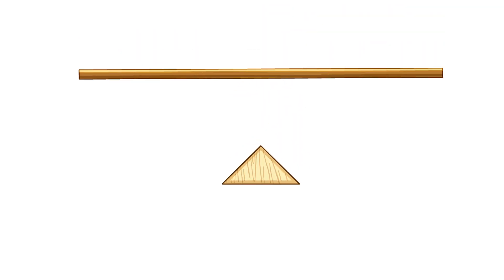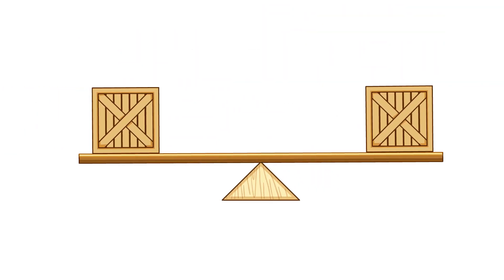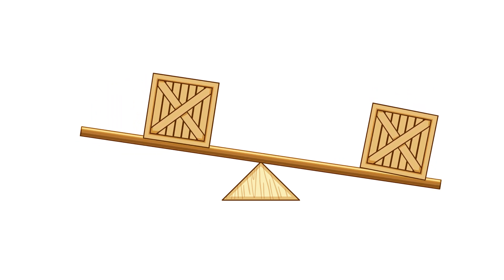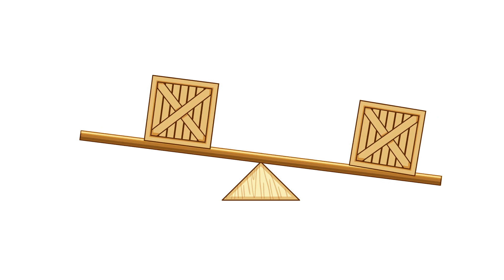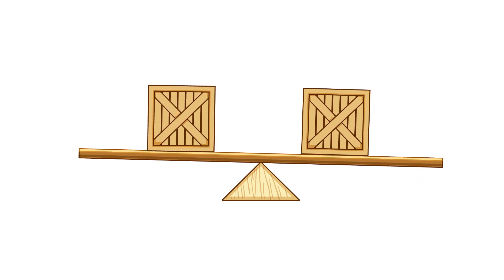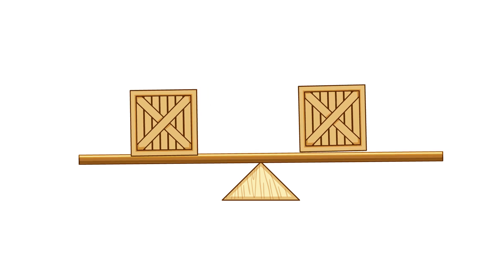A body initially at rest does not rotate if the sum of all the clockwise movements acting on it is balanced by the sum of all the anticlockwise movements acting on it. This is known as the principle of movements.